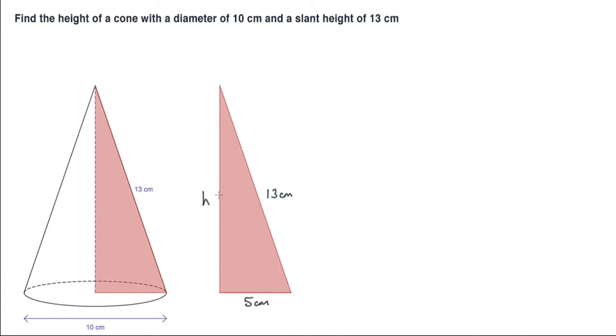Now hopefully you can see that this is a Pythagorean triple. It's a 5-12-13 triangle, so just by observation I know my height is going to be 12 centimeters.